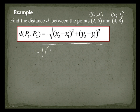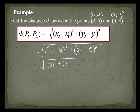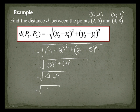So let's fill in what we know: x₂ is 4 minus x₁ which is 2, squared, plus y₂ which is 8 minus y₁ which is 5, squared. 4 minus 2 is 2, squared; 8 minus 5 is 3, squared. So we have 4 plus 9, which turns out to be the square root of 13. The square root of 13 does not reduce because a perfect square does not divide evenly from it, so this is our answer.